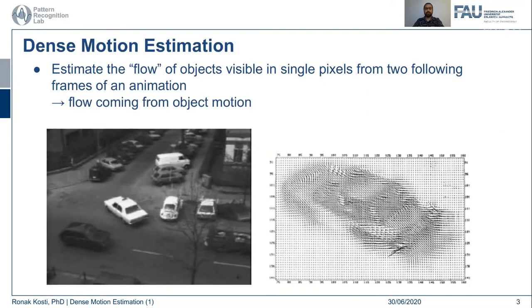So what do we mean by motion estimation? In motion estimation we have to determine computationally the flow of our object of interest. Dense means that for each and every pixel we have to find this flow, and it is usually done in a video or a small animation or GIF where there are at least two different frames to compute this flow from.